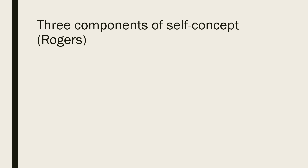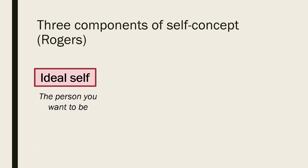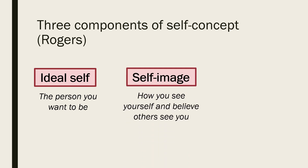Humanist psychologist Carl Rogers believed that self-concept is made up of three different parts. The ideal self is the person you want to be — the person who has the attributes or qualities you are either working toward or want to possess; who you envision yourself to be if you were exactly as you wanted. Self-image refers to how you see yourself at this moment in time and how you believe others perceive you, with attributes like physical characteristics, personality traits and social roles all playing a role.